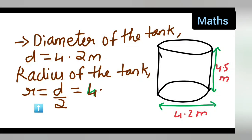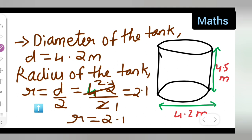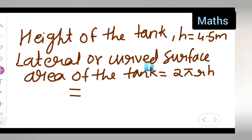Radius = 4.2 divided by 2 = 2.1 meters. Now, the height of the tank is given to be 4.5 meters, so write down: height of the tank h = 4.5 meters.